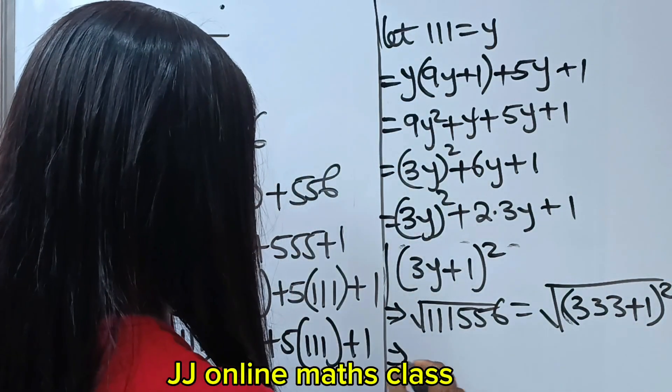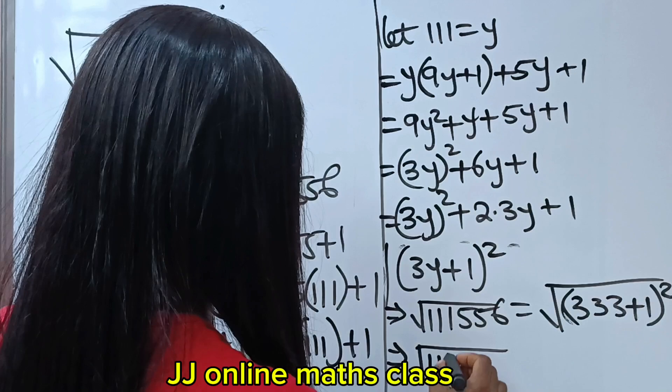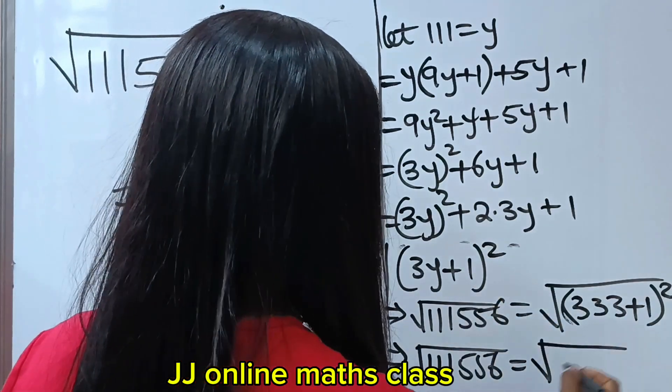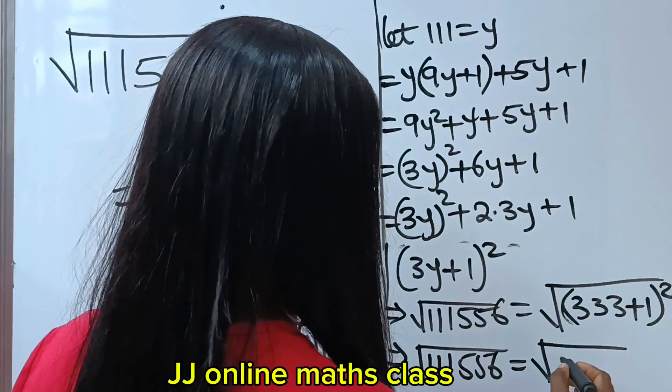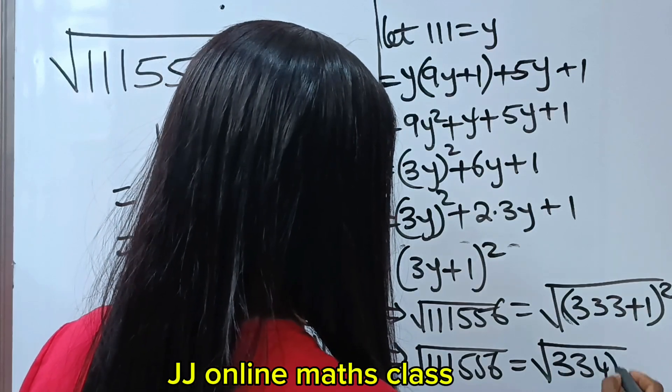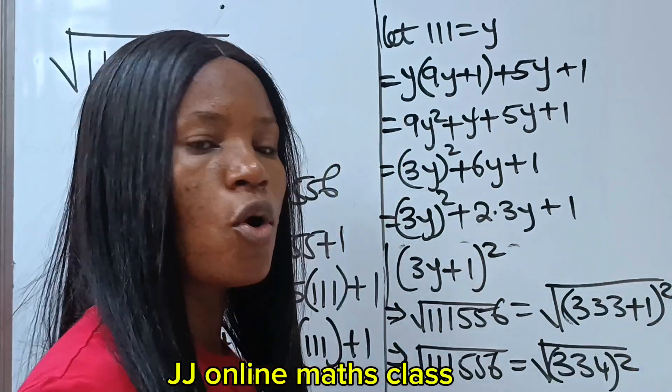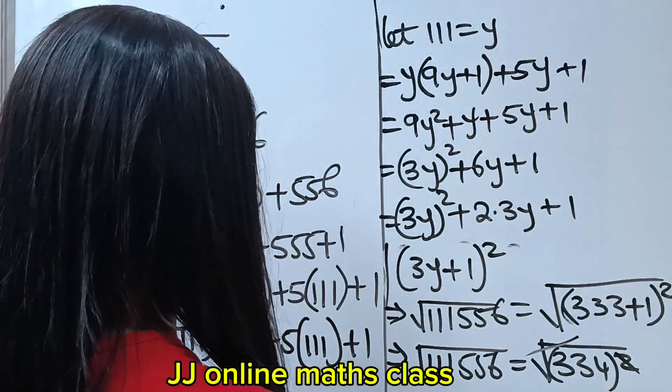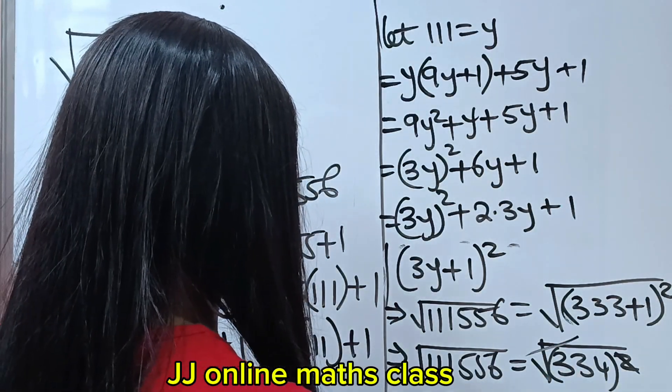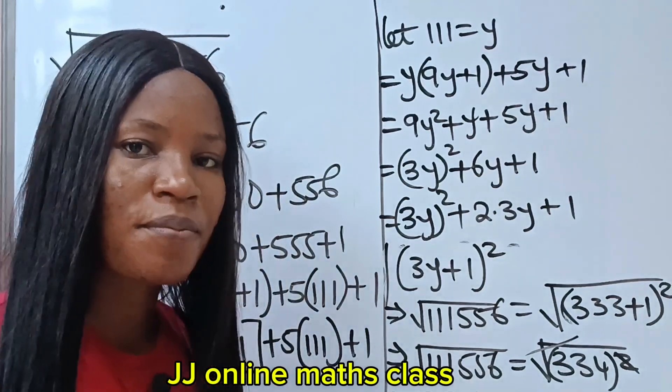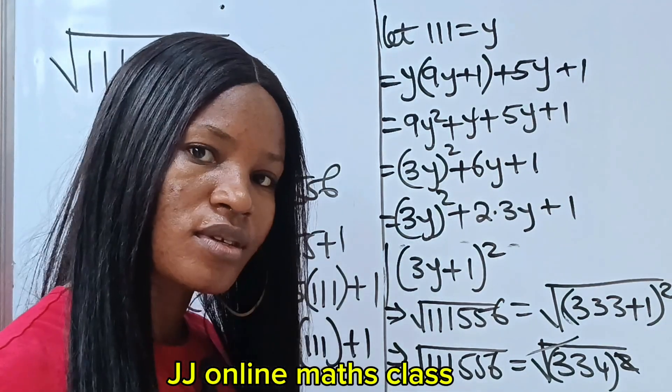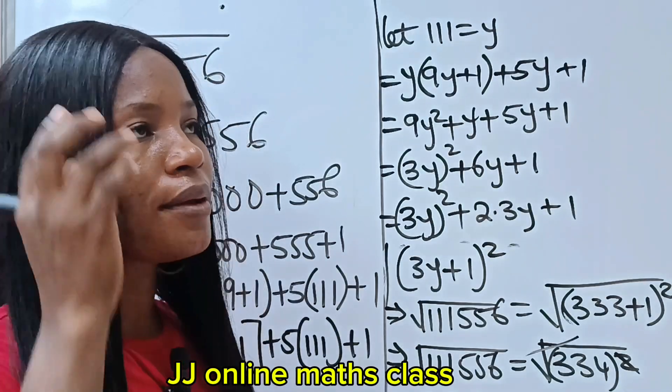So, this implies that square root of 111556 is equal to square root of 333 plus 1 will give us 334 all squared. Now, this square is going to cancel this square root and our final answer becomes 334. As easy as that. Now, let me show you how to find this in less than one minute.